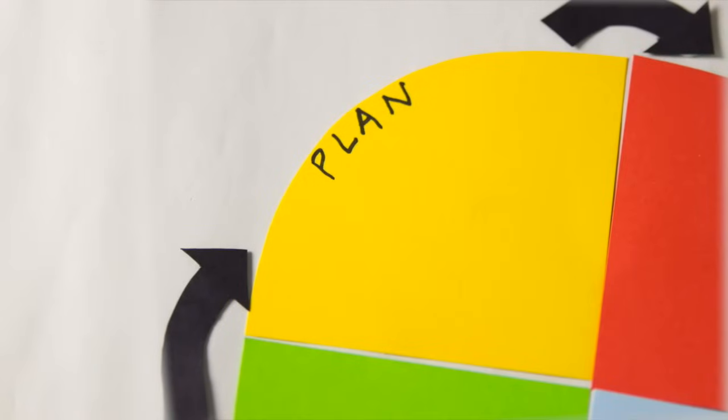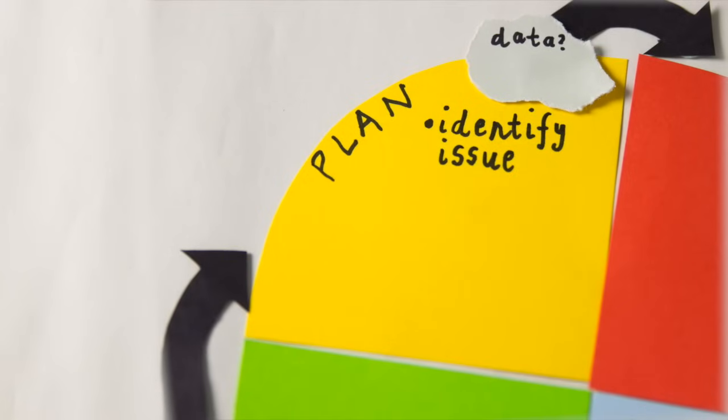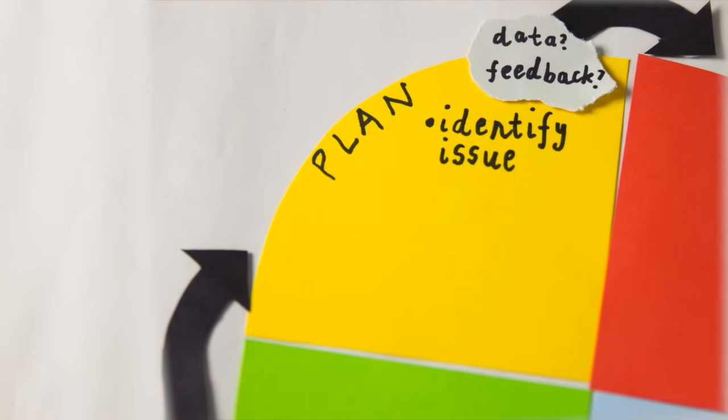The plan stage has three parts. The first is finding the issue for improvement. All issues are different so there are many ways of doing this, maybe interpreting data or staff and patient feedback. Issues pop up in unexpected places so you've got to be on the ball to notice them.